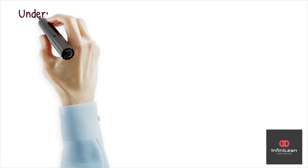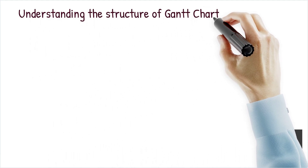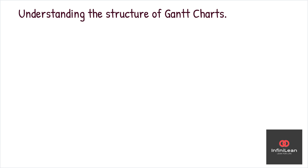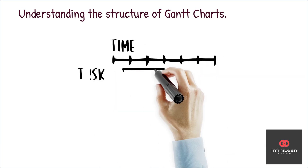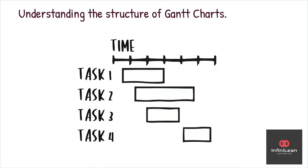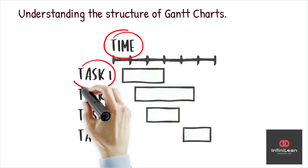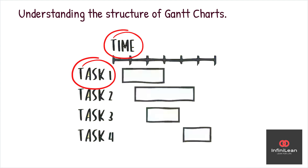A Gantt chart uses a horizontal bar chart format. The timeline runs along the top while tasks are listed down the side. Each task is represented by a bar, the length of which reflects its duration. This setup quickly shows task overlaps, deadlines, and dependencies. In Lean Six Sigma, this clarity can significantly improve collaboration among team members as everyone can visualize the process flow at a glance.